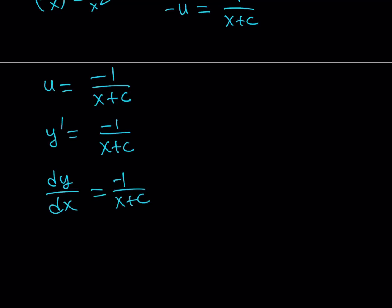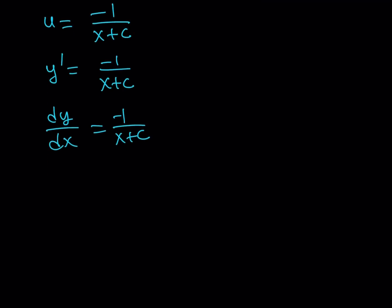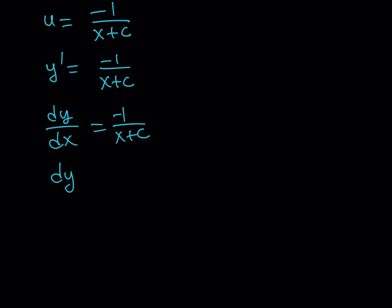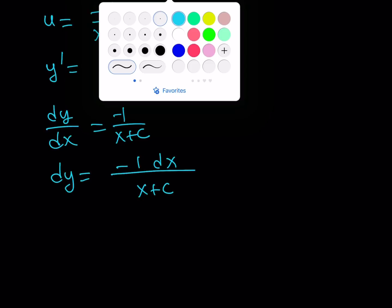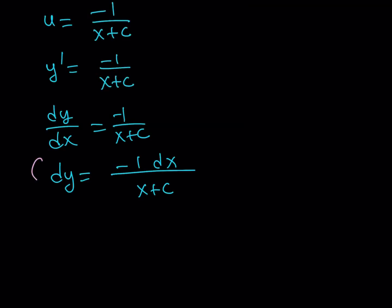Let's go ahead and write the y prime as dy over dx, and then you can separate the variables here by putting the dx and x plus c together, and we can keep the negative on the right hand side, it doesn't really matter, same thing. So we can safely say that this is like negative 1 dx over x plus c. So at this point, since we got dy and dx on either side, that means they're separable, we can go ahead and integrate both sides to solve for y.